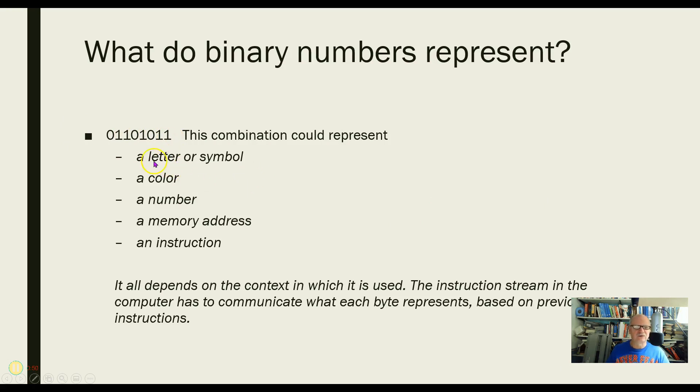Well, it could be a lot of things. It could be a letter or some symbol. It could be a color, a number, a memory address, an instruction. How does it know? Well, it only knows by context.